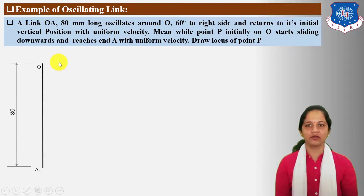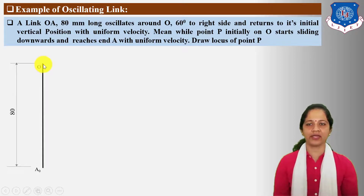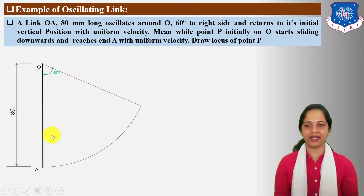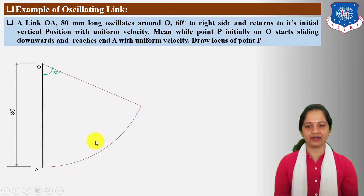First, draw vertical link OA. The length of OA link is given 80 mm. From point O, locate a 60-degree angle line and draw an arc covering the 60-degree angle. This link oscillates to the right side up to 60 degrees and returns to its original position.